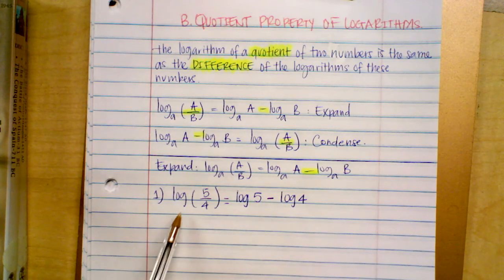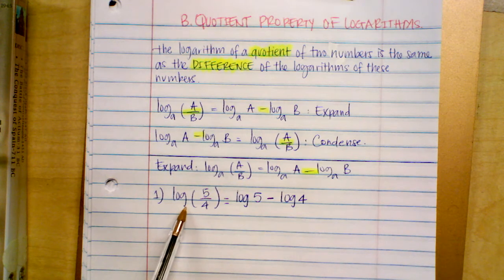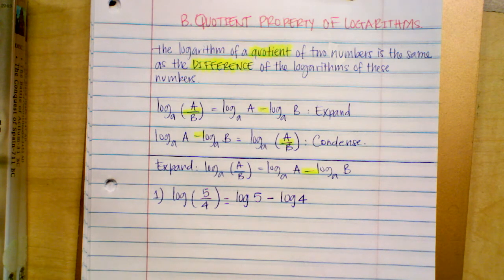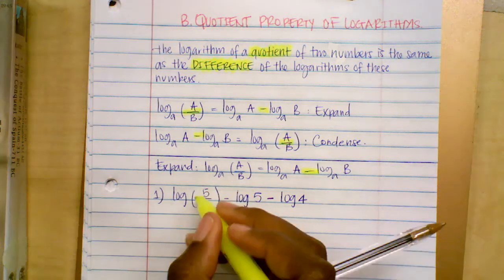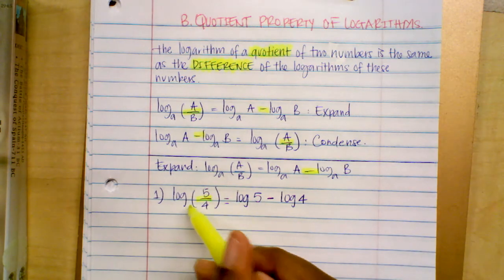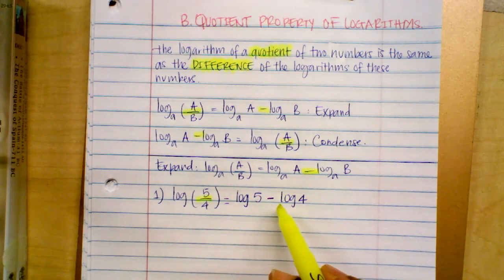Remember, if you don't see a number at the bottom for the base, the base is 10. In mathematics, we refer to this kind of log as a common log. So again, when you are dividing, to go from one single log to two logs, you use subtraction.